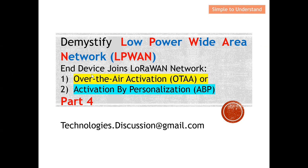The first method will be Over the Air Activation, also known as OTAA. Another method is Activation By Personalization, also known as ABP. These are the two methods for an end device to join a LoRaWAN network. I'm also going to discuss what a private key and a public key are. This will cover all the objectives for this video.